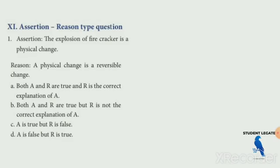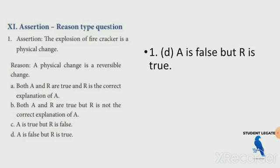Assertion and reasoning. Explosion of firecrackers is not a physical change — it is a chemical change, because smoke is produced, bad smell is produced, fire is produced, and a new product is produced. Physical changes are reversible, so the reasoning is right, but the assertion is false. Firecrackers produce chemical changes.